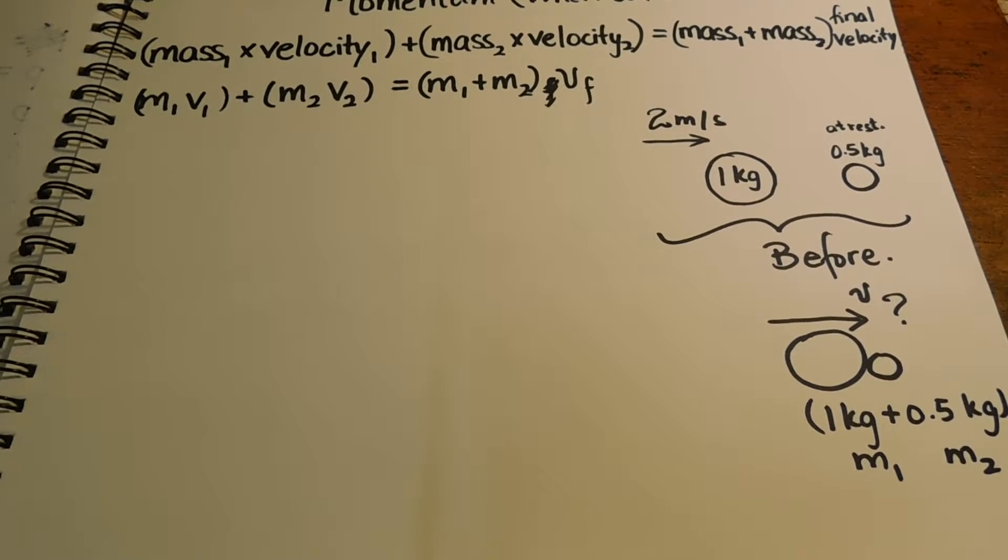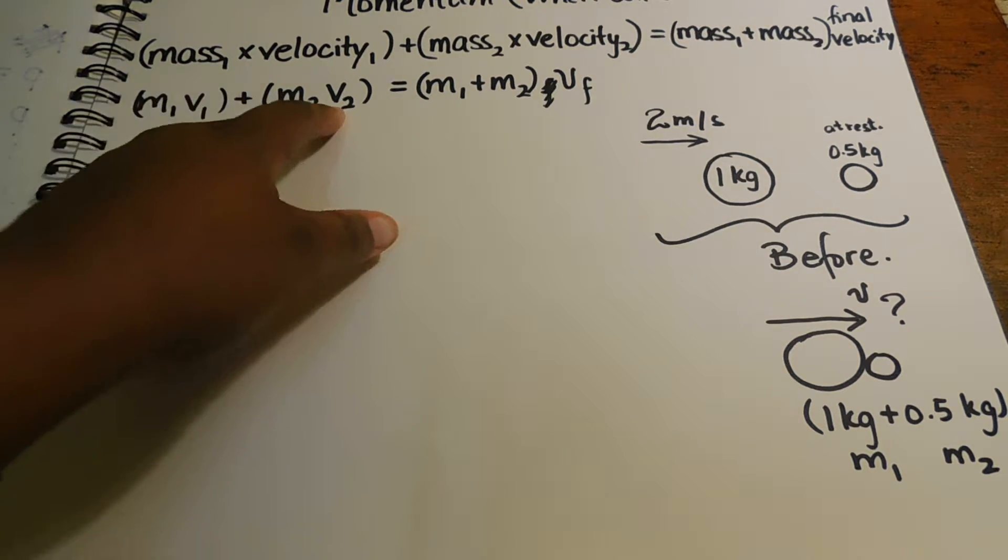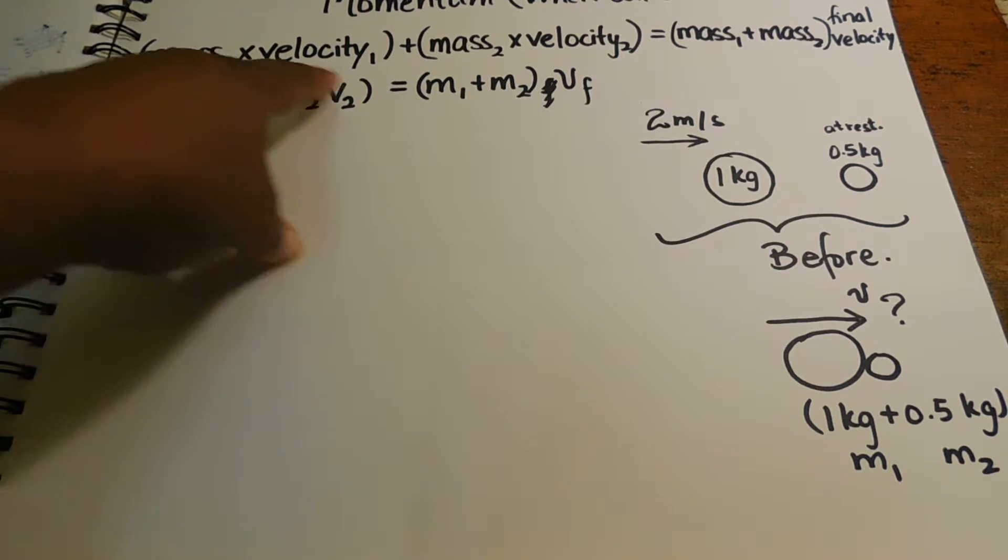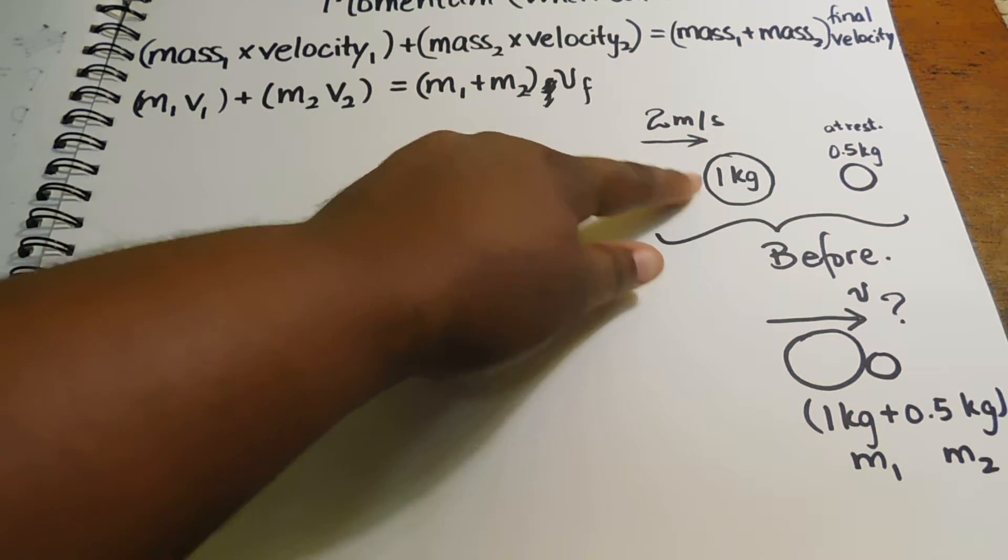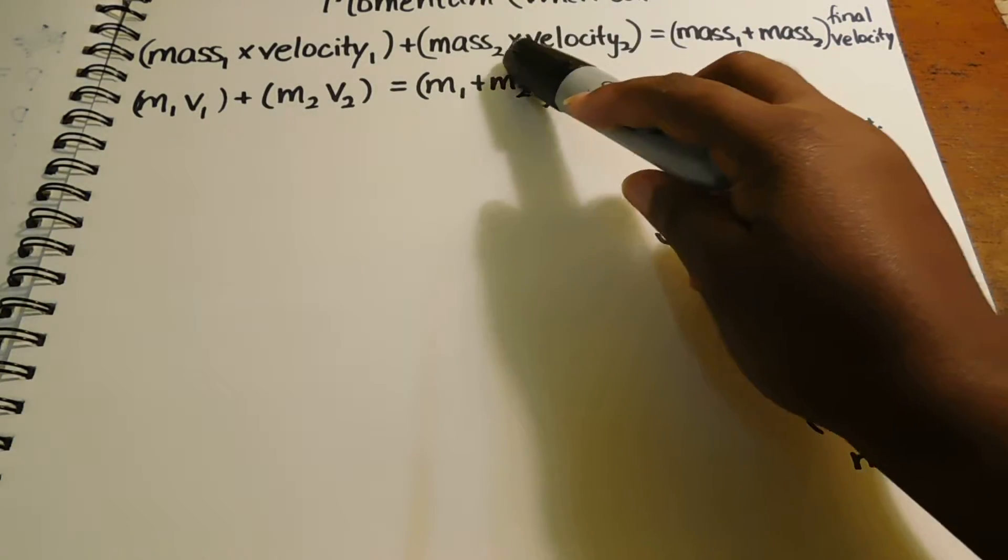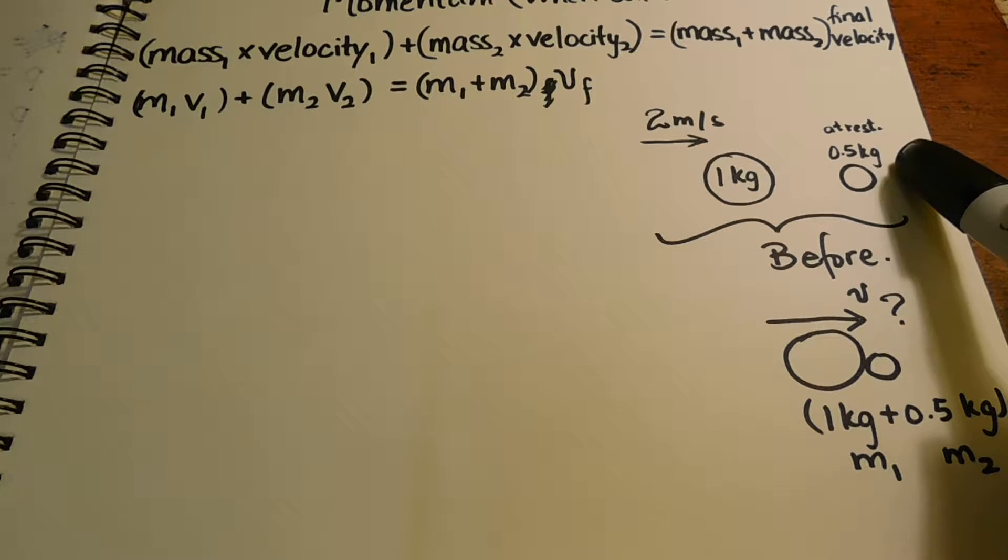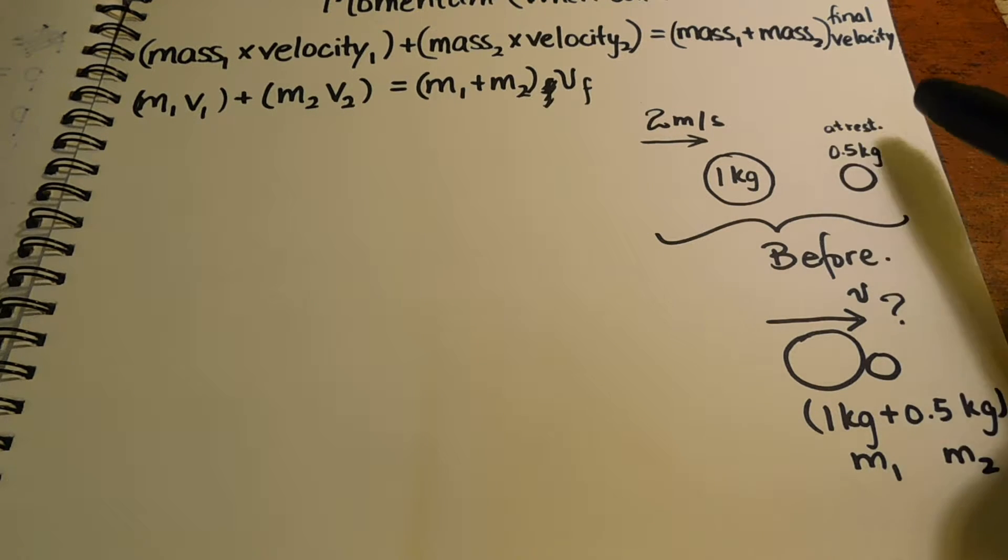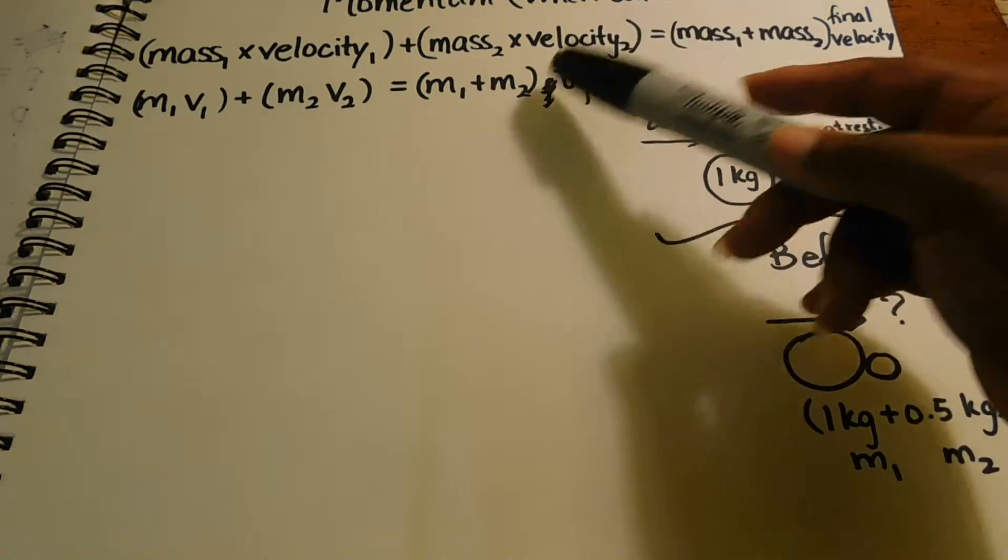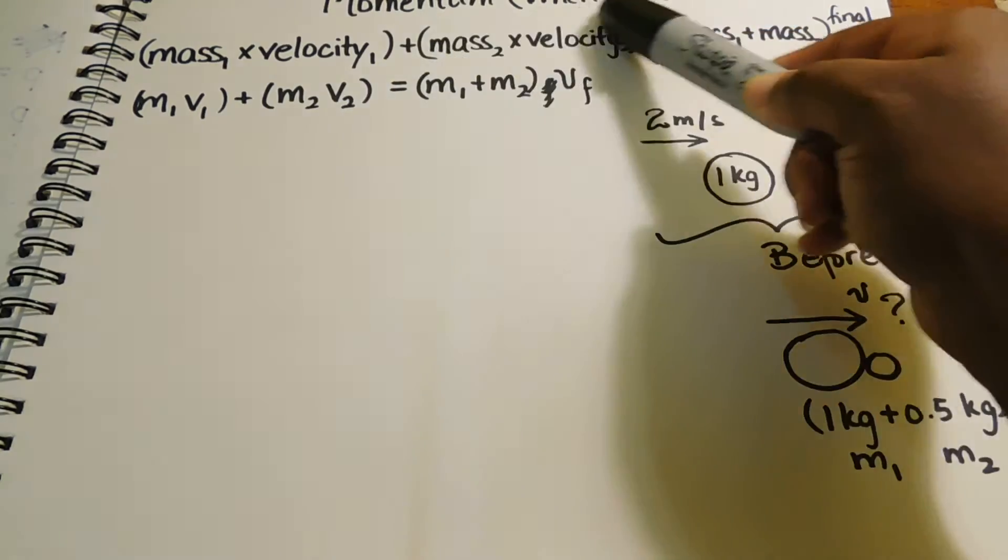And this is where this very long important equation comes in. You have, in the before side, you have the mass 1 times velocity 1, which would be 1 kilogram times 2 meters per second, plus the mass 2 times velocity 2, which would be 0.5 kilograms times 0 meters per second because it wasn't moving. So therefore, from the get-go, this goes. This second part, it goes.